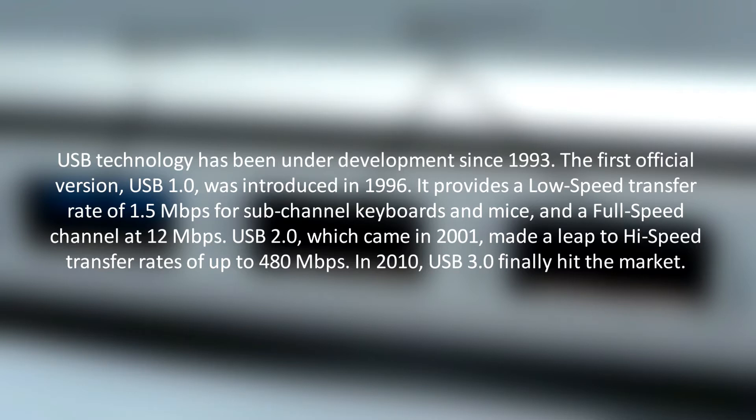USB 1.0 provides a low speed transfer rate of 1.5MB per second for sub-channel keyboards and mice, and a full speed channel at 12MB per second. USB 2.0, which came in 2001, made a huge leap to high speed transfer rates of up to 480MB per second.